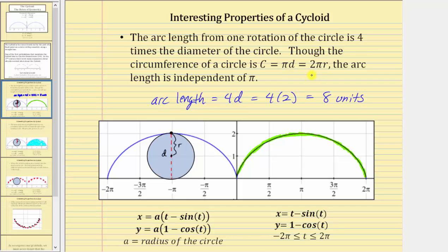Or two times pi times the radius. Notice how the arc length of the curve is independent of pi, meaning pi does not appear in the arc length, though it would appear in the length around the circle.